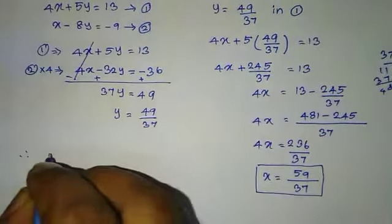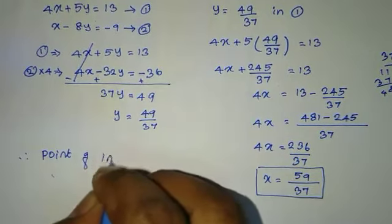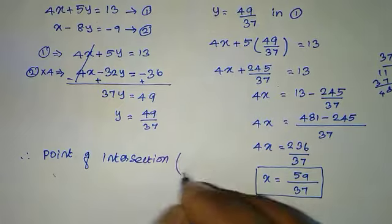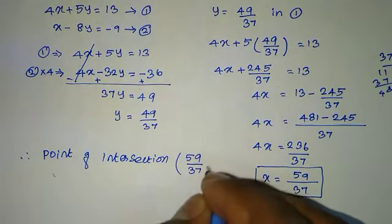Therefore, the point of intersection is x, y equal to 59 by 37, 49 by 37.